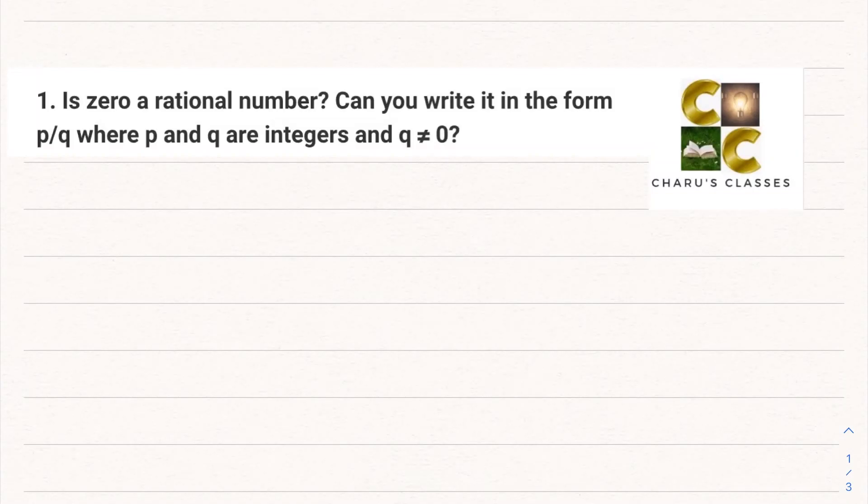Hello students, welcome to Charu's Classes. Today we are going to start Number Systems Class 9, Exercise 1.1. Question number 1: Is 0 a rational number? Can you write it in the form p by q where p and q are integers and q is not equal to 0?